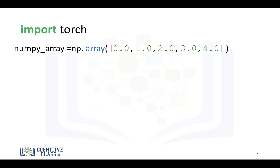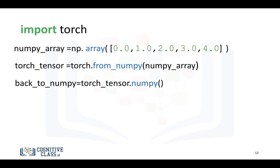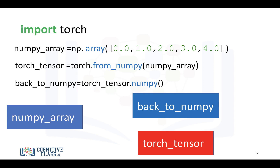We can cast a NumPy array to a tensor very simply in PyTorch using the function from_numpy. This will cast the numpy_array to a torch.tensor. We can convert it back using the method .numpy(). Note that the variable cast back to NumPy is actually pointing to the torch tensor, and the torch tensor is actually pointing to the NumPy array. In the lab, you'll see what happens to the torch tensor if you change the NumPy array.